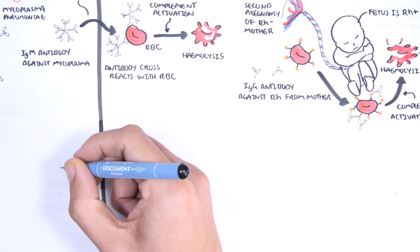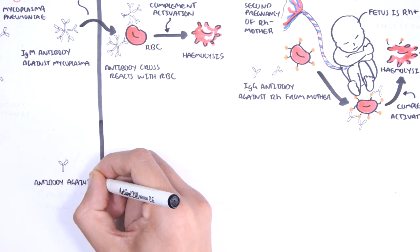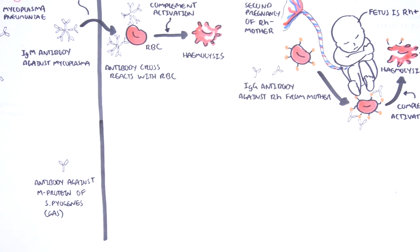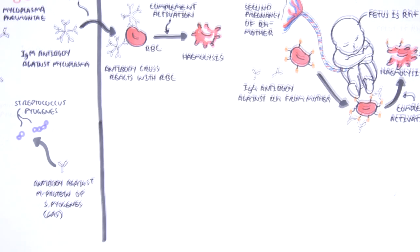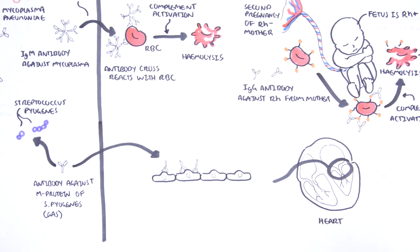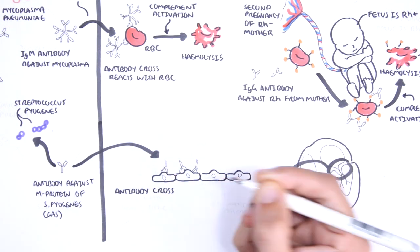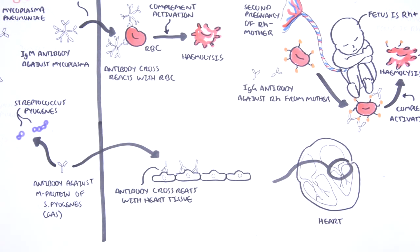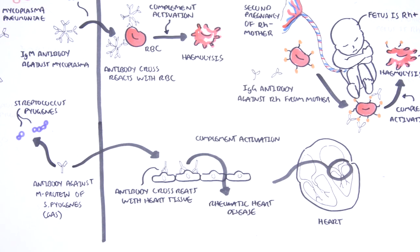Finally, antibodies formed against the M protein of Streptococcus pyogenes, also known as group A streptococcus, can actually cross-react with cardiac tissues. Cross-reaction of the antibodies activates the complement system, leading to a serious complication of Streptococcus pyogenes infection called rheumatic heart disease. This is another example of a hypersensitivity type 2 reaction.